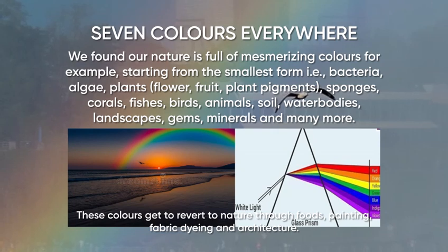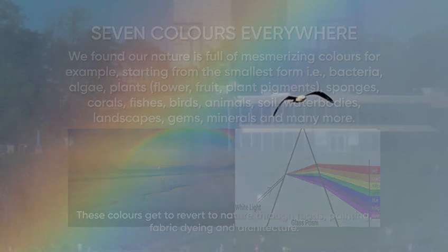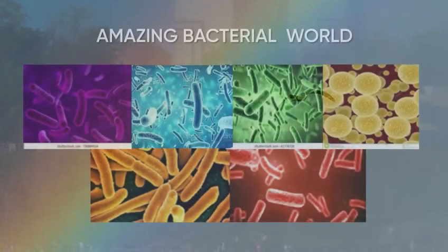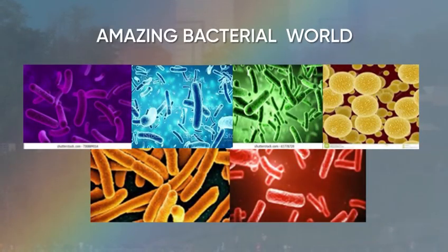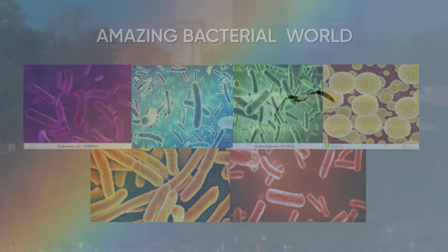There are seven colors everywhere. Let's talk about the microbial world — we find these seven colors everywhere, starting from bacteria and algae, to plants consisting of fruits, plant pigments, and flowers, as well as other organisms such as sponges, fishes, birds, animals, gems, and many more.